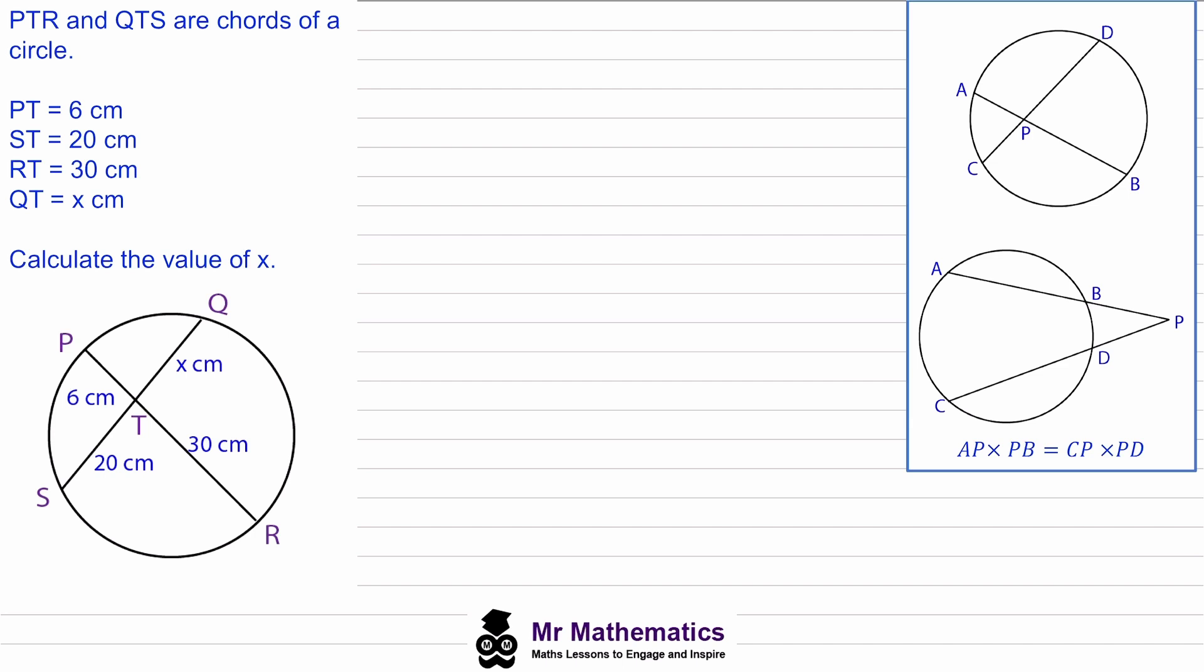In this video I'm going to work through two examples that show you how we use it. So in example one we've been told that PTR, which is this chord here, and QTS, which is this one, are chords of a circle. We can see PT is 6, ST is 20, RT is 30, and QT is x. We've been asked to work out the value of this x.